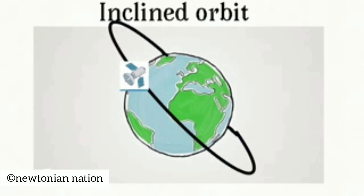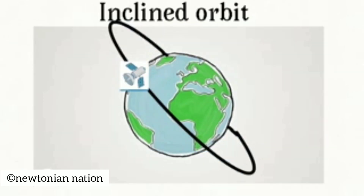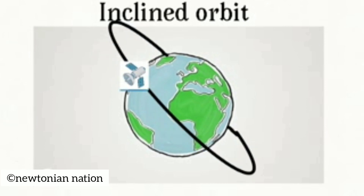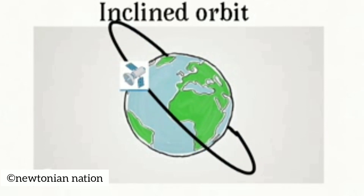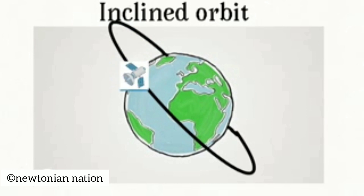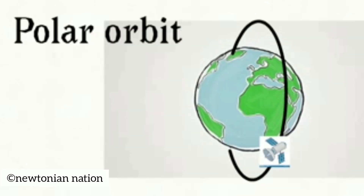Inclined Orbit — these are virtually all those orbits except those that travel directly above the north-south equator. It has an angle of inclination of 180 degrees.